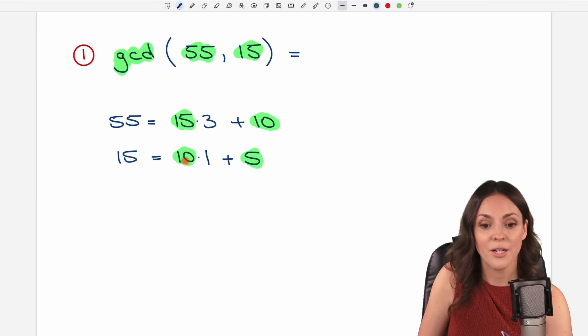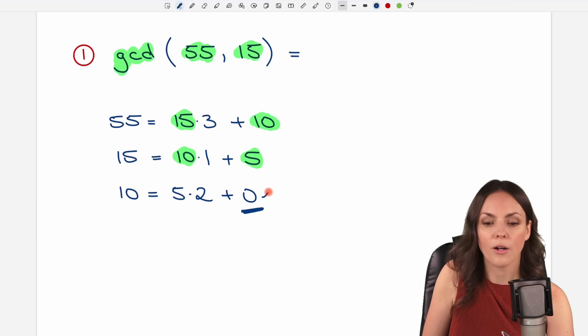We do the same thing. We take the 10 and write it as, how often does the 5 go into the 10? This time the 10 is divisible by 5 even. So it's 5 times 2, which equals 10. So we don't have any remainder. Our remainder equals 0. And as soon as you arrive at a 0, then you automatically know that the previous remainder is your greatest common divisor of these two numbers. So the 5 is our result.